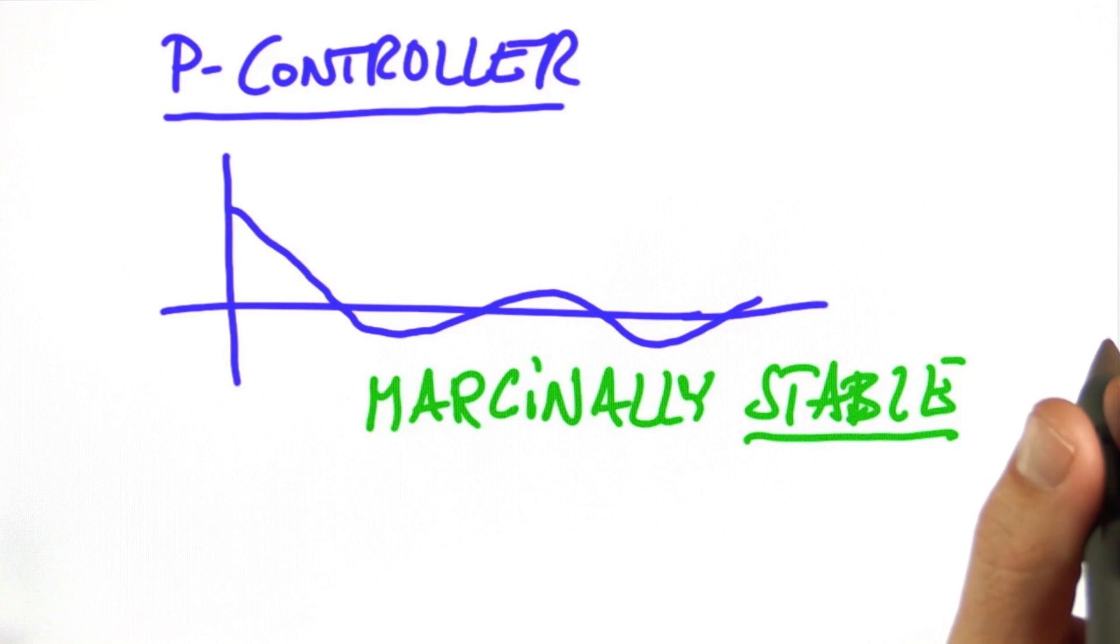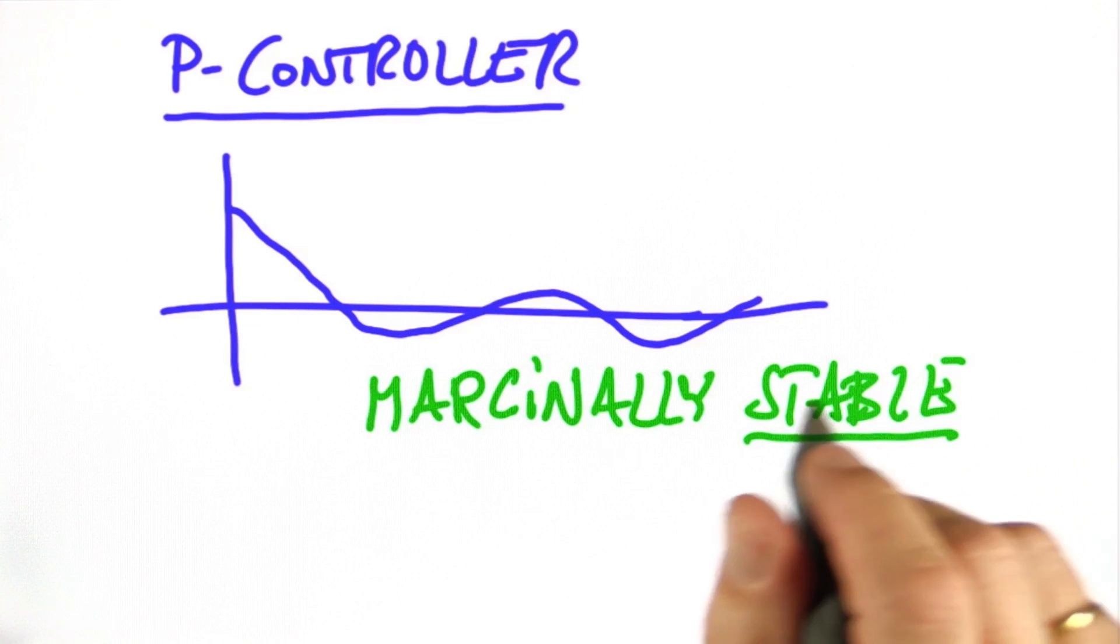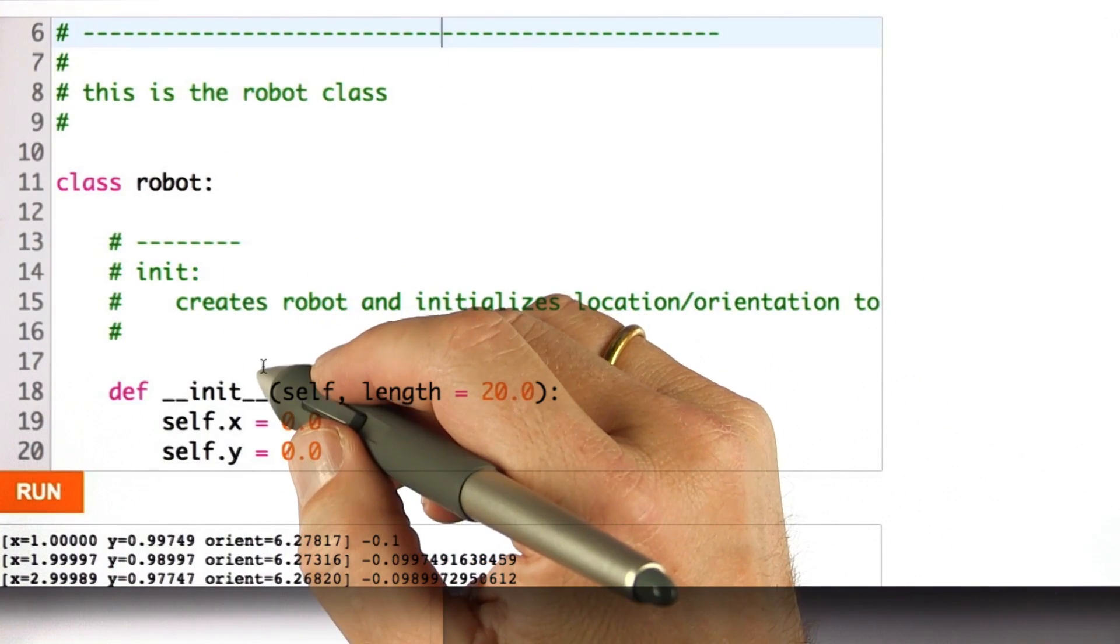So I want you to implement such a controller. Here's the code I've prepared for you. There's a class robot with which you're familiar.